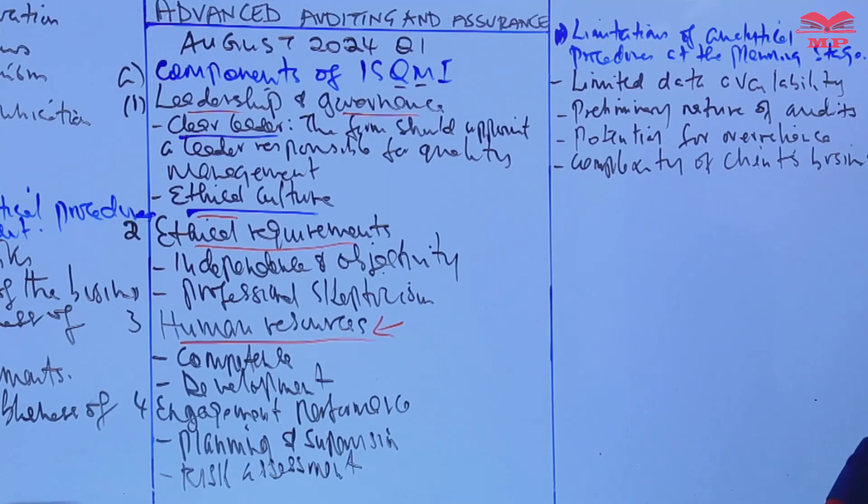Because we have intercompany transactions, related party transactions, related parties, which at the planning stage the auditor may not have much understanding, so analytical procedures may not be useful at that point.